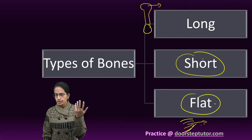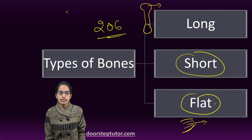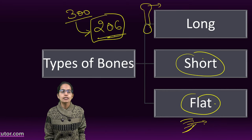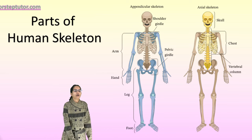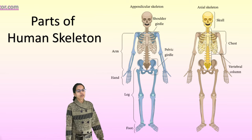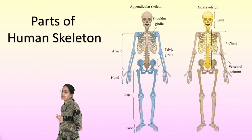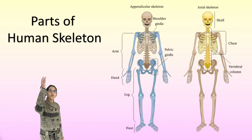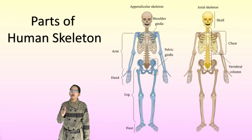The human skeleton has 206 bones; however, a young child has around 300 bones which fuse as the child grows into an adult with 206 bones. The human skeleton can be classified as an axial skeleton and an appendicular skeleton. The axial skeleton runs vertically in the body.